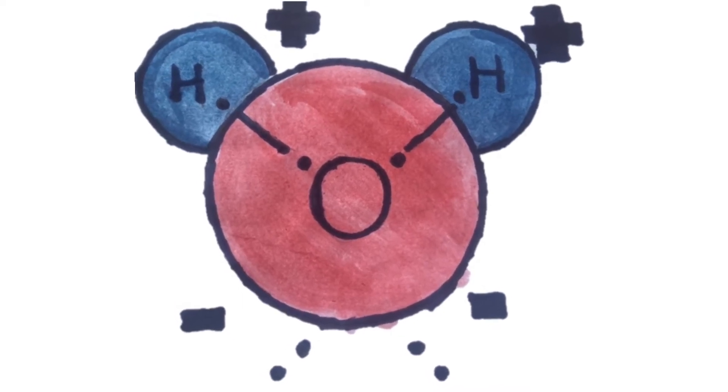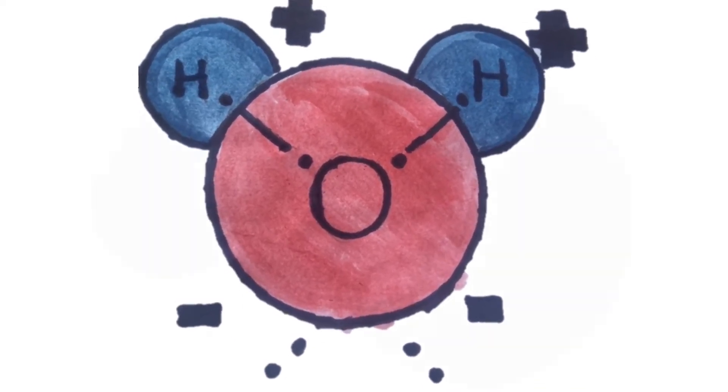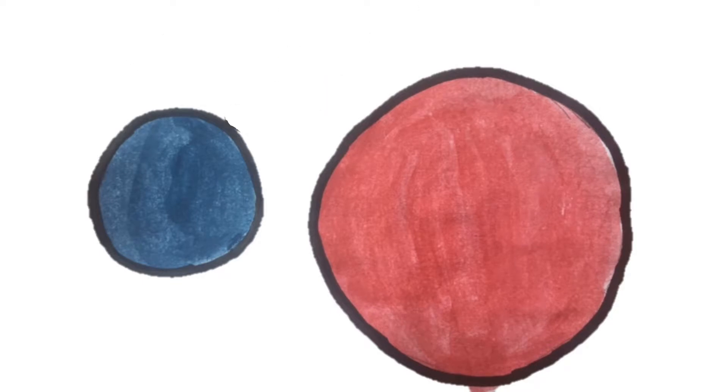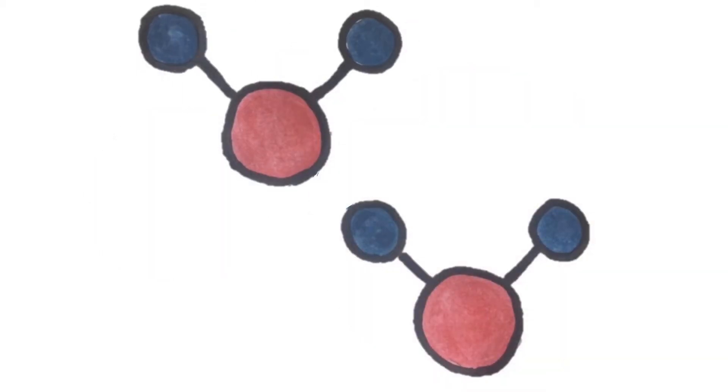However, polar covalent bonds are not the only kind of bond created in water. In nature, opposites attract, and in this case, the negatively charged oxygen from one water molecule is attracted to the partial positive charge from the hydrogen of another water molecule. Once the two water molecules are in proximity to one another, they create a hydrogen bond between them.